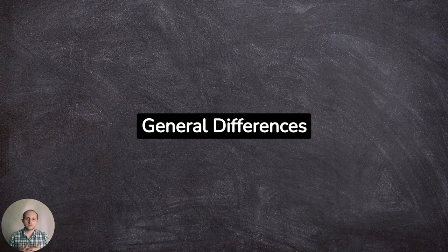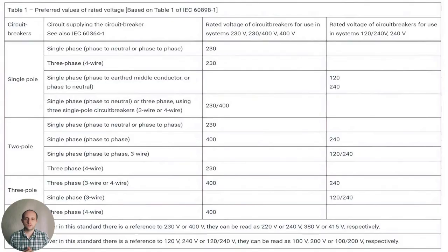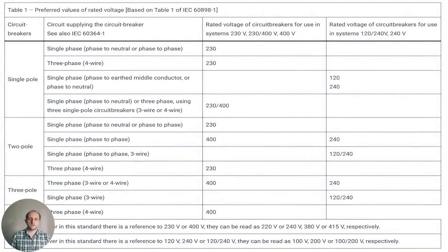General differences: preferred values of rated voltage depending on the type of circuit breaker and number of poles — see the table on the screen.